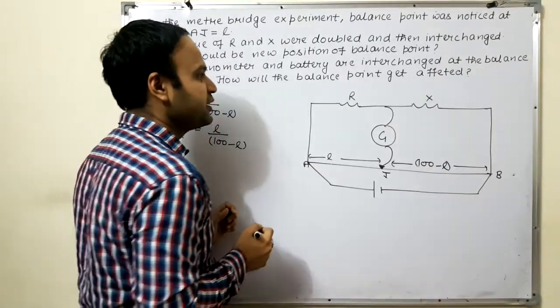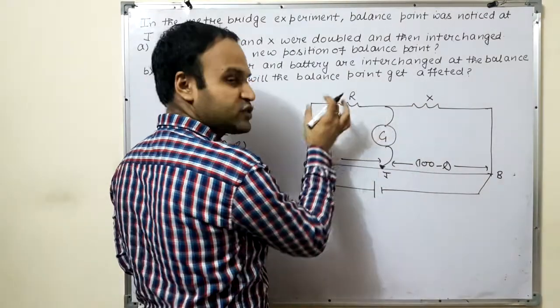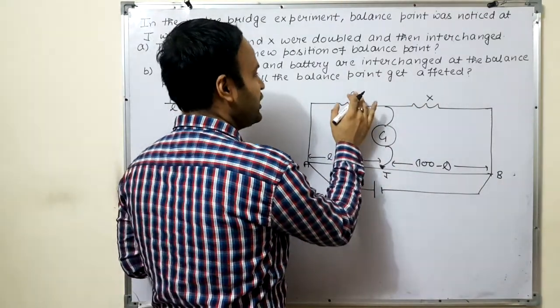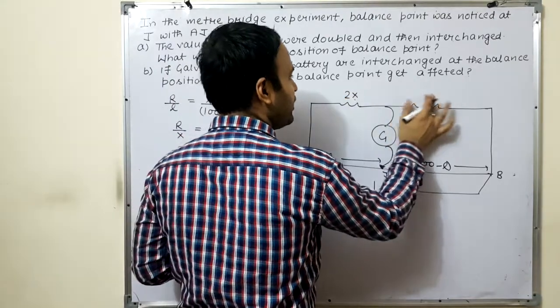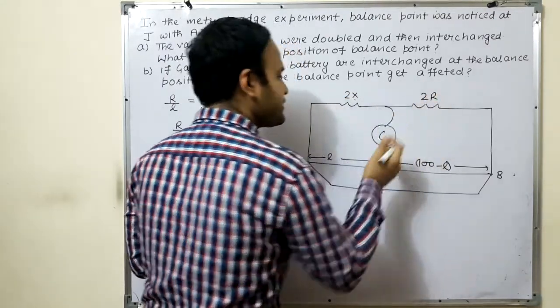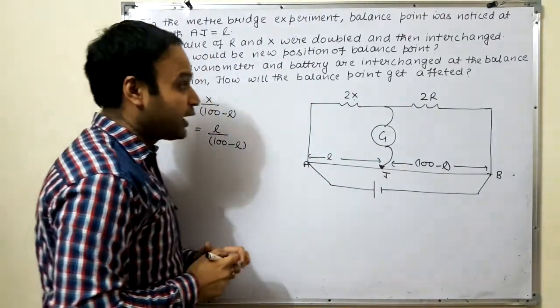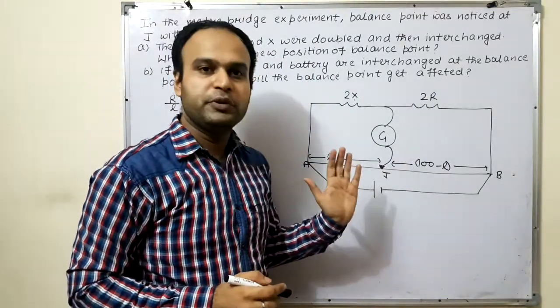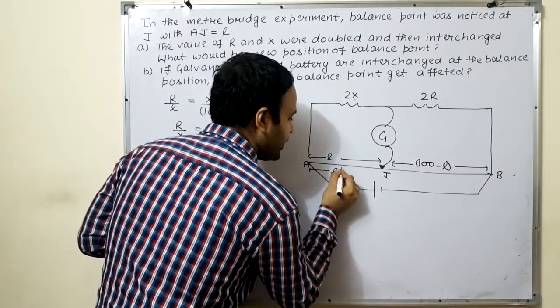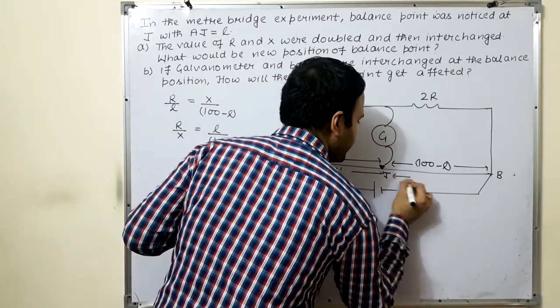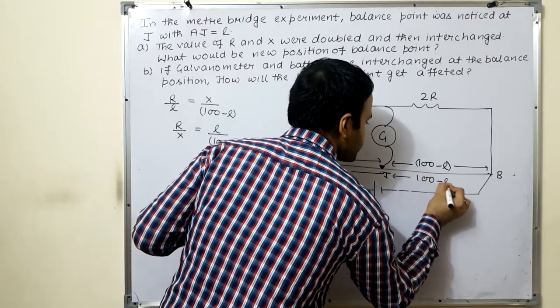In the next situation, what do we have to do? We have to double and then interchange. Means R to place, we put 2X and X to place, we put 2R. If we find the balance point, then balance point will change. Let it be that the new balance point will be at L dash. So it will be 100 minus L dash.